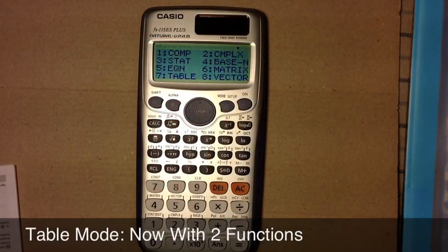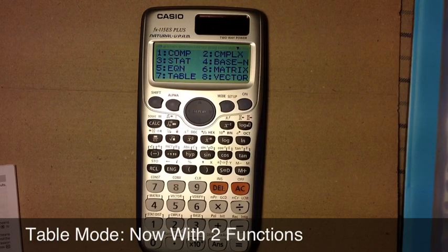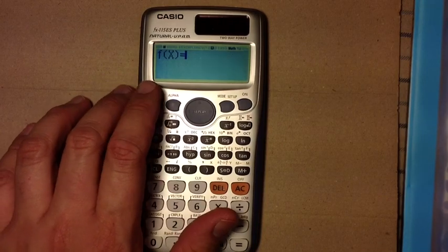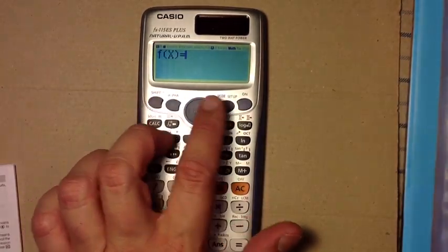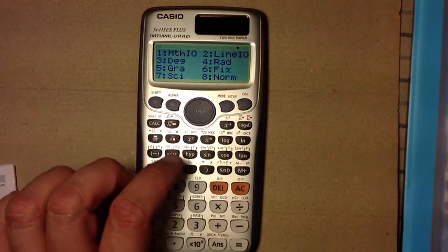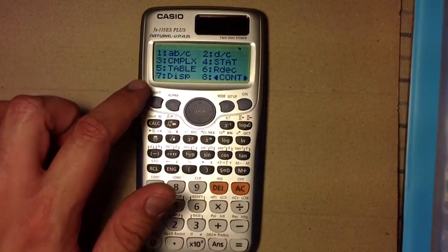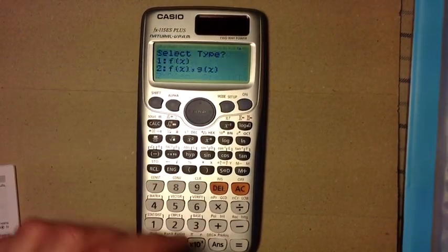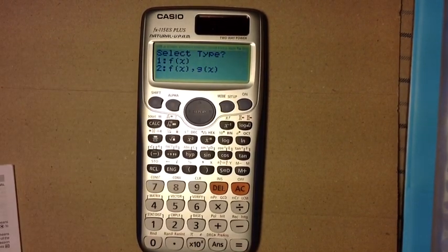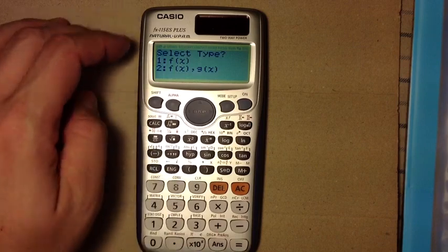And here are some of the new features that comes with the 115ES+. The 115ES+, you'll still have your table, except this time, we'll go into table mode, and if you go into setup, shift, setup key, and scroll down to option 5 table, you can select how many functions the table will contain.